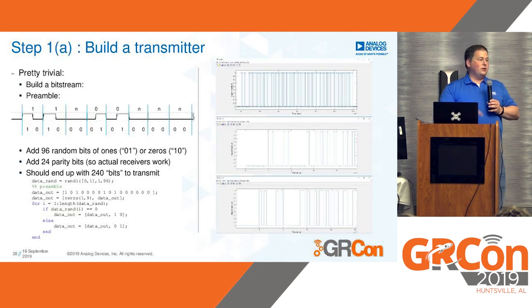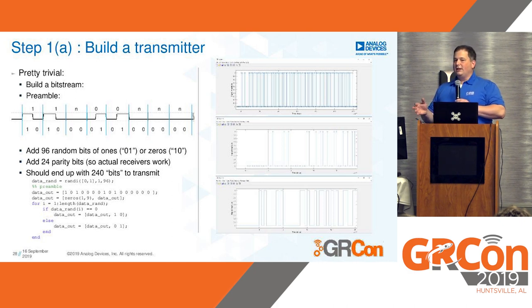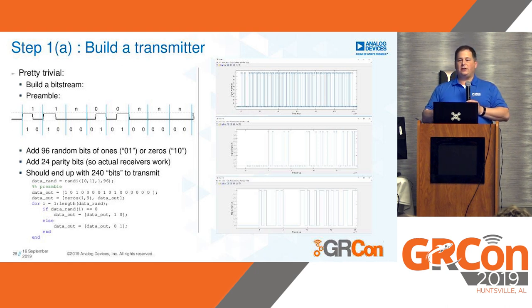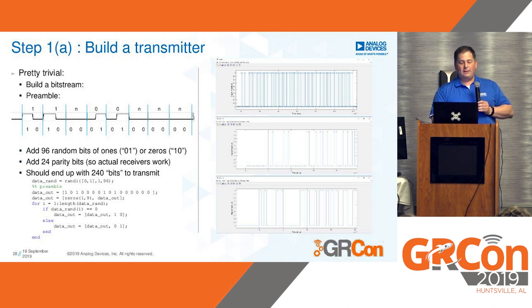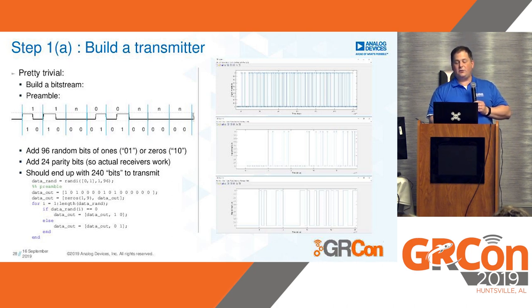The first thing when you start building a receiver — step number one — is always build a transmitter. That way you can test your receiver, and you will learn a lot about the signal by actually building a transmitter. Transmitters are actually much easier than receivers. To build a bit stream, we take our preamble, add 96 random bits, add the parity so receivers actually work, and we end up with 240 bits to transmit. We can see we're transmitting zeros and ones — that's what we build up.